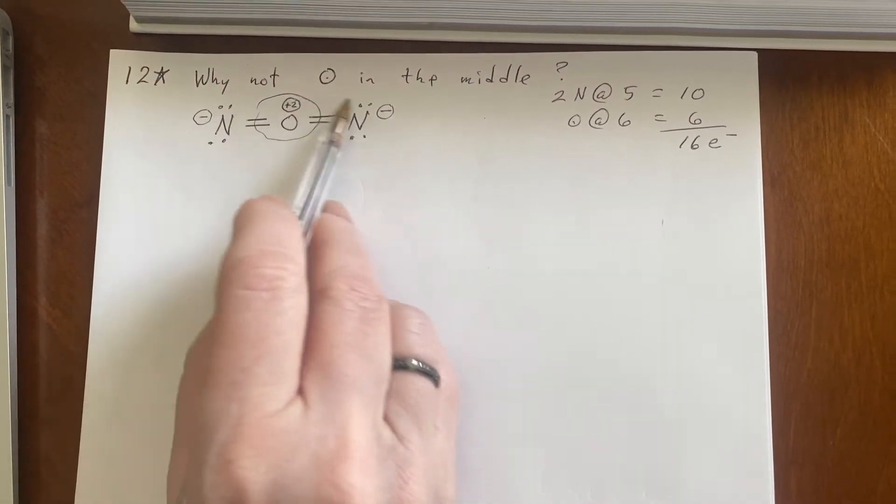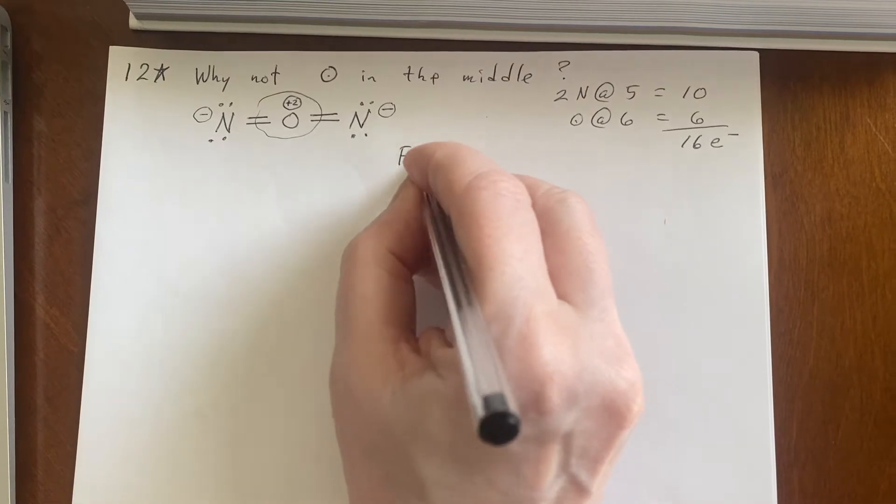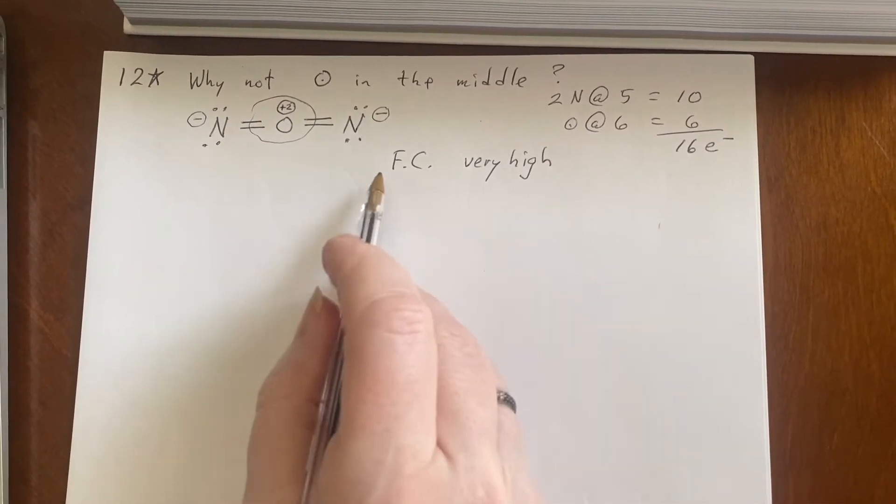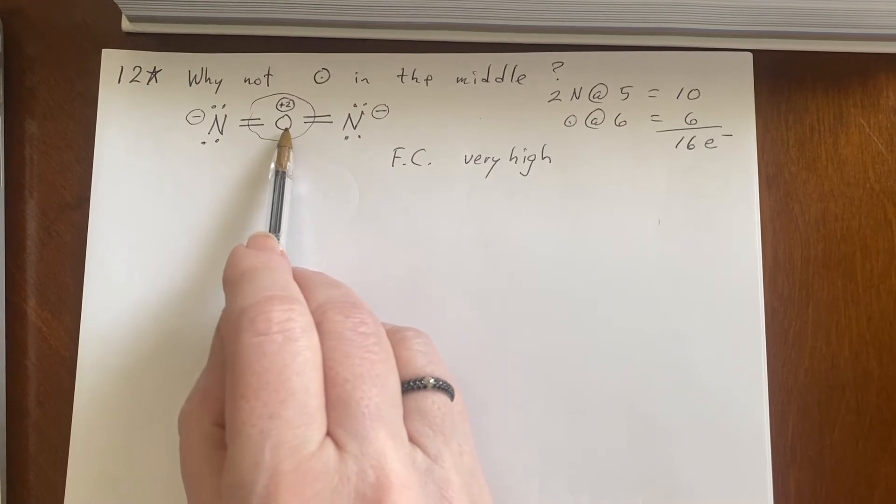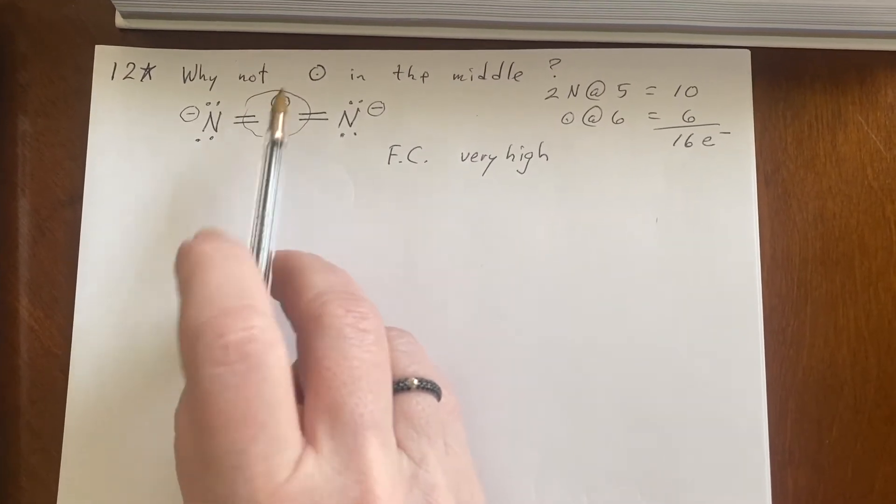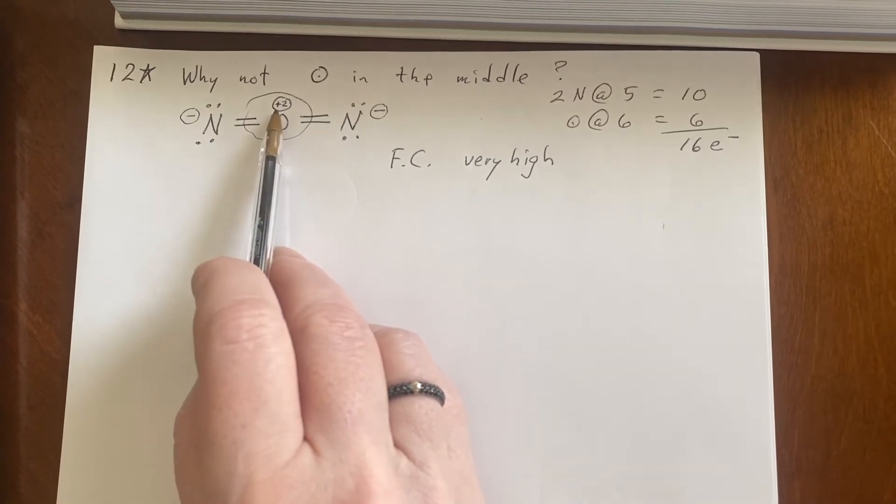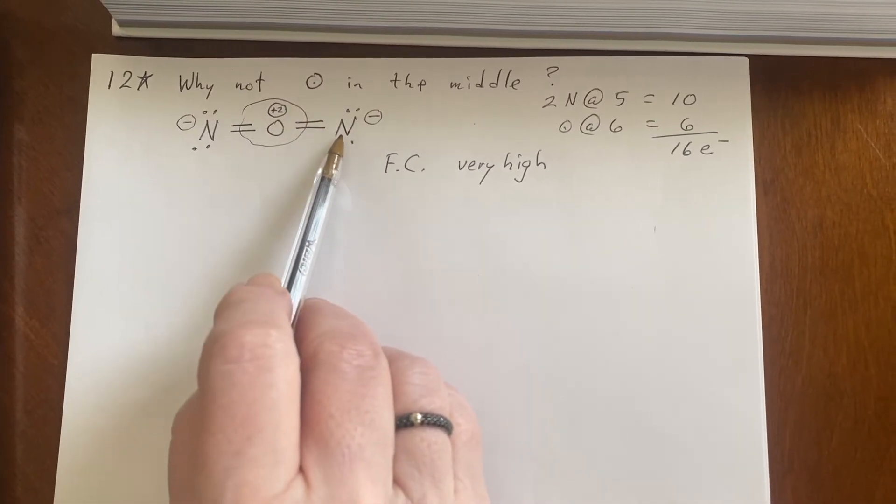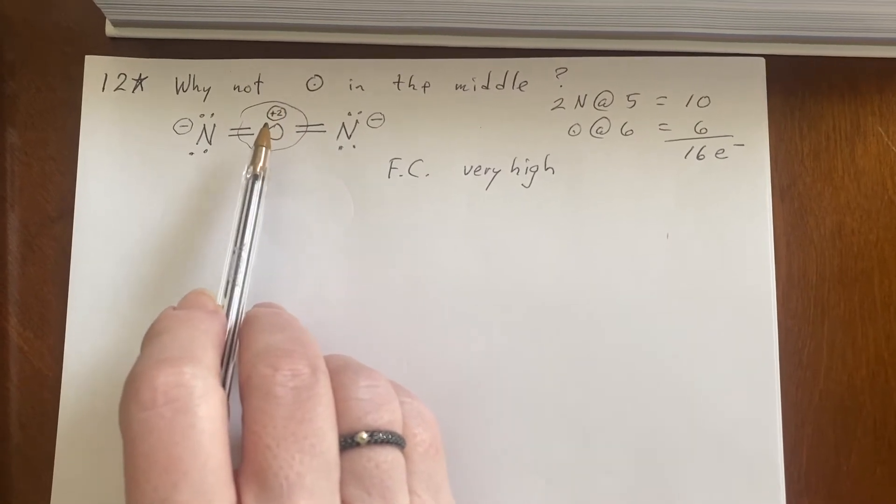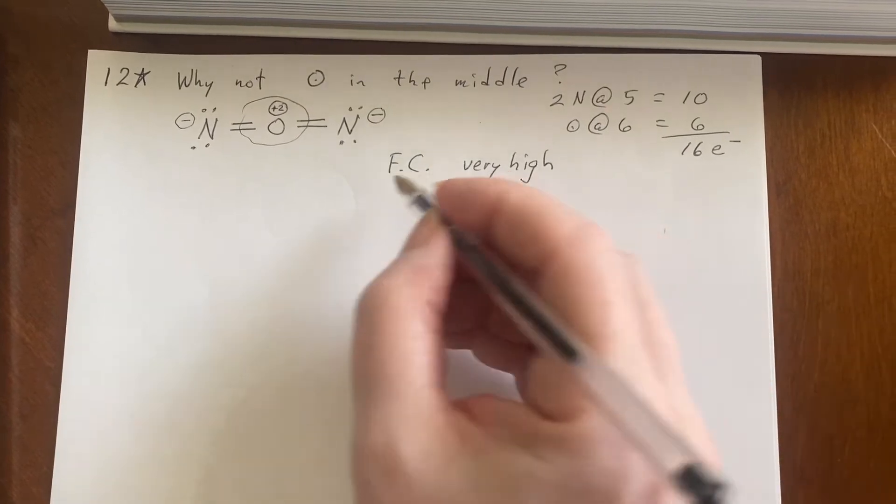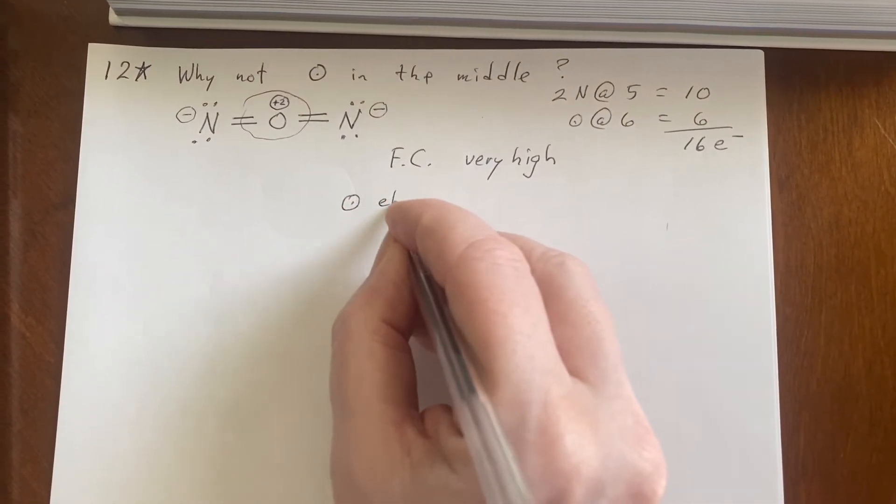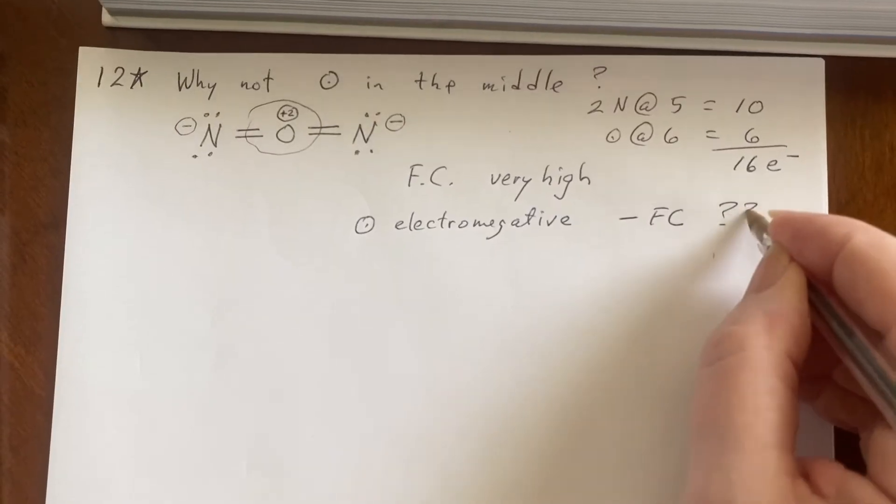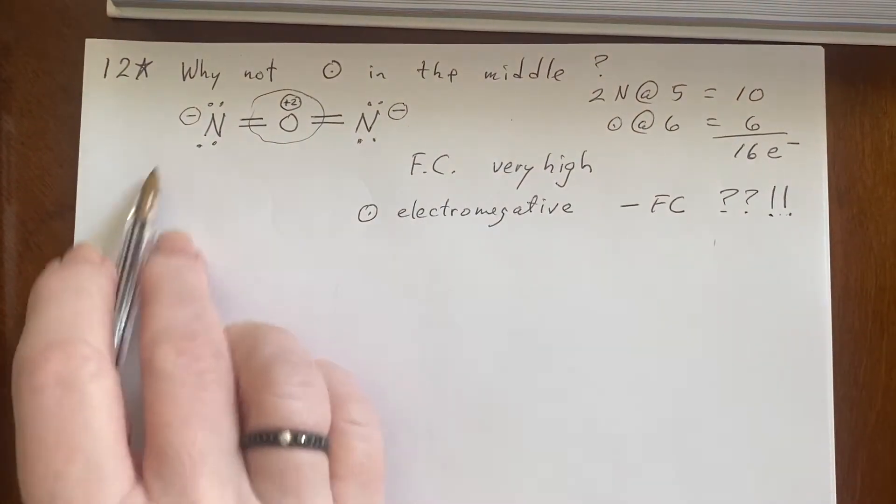All right, so those formal charges are very high. That's not promising to begin with. And even worse, between Nitrogen and Oxygen, Oxygen is the most electronegative, and yet we have a positive formal charge on it. We would expect that the positive formal charge would be on the more electropositive, and the negative formal charge would be on the more electronegative element.